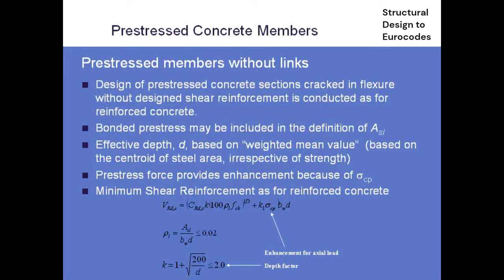There isn't actually very much to say about pre-stressed concrete, because in the same way as for bending, it's the same rules. If you have no links in your pre-stressed concrete - so probably a pre-stressed concrete slab rather than a beam - we work from exactly the same expression as for reinforced concrete. The only benefit you get from pre-stressing is in the σCP term, which is the actual stress applied by the pre-stressing force. When calculating ASL, the area of steel, you can include bonded pre-stressing, but only if it's bonded - if it's unbonded you can't consider it. For combinations of pre-stressed and untensioned steel, the effective depth is a weighted mean based on the centre of the steel, irrespective of strength.